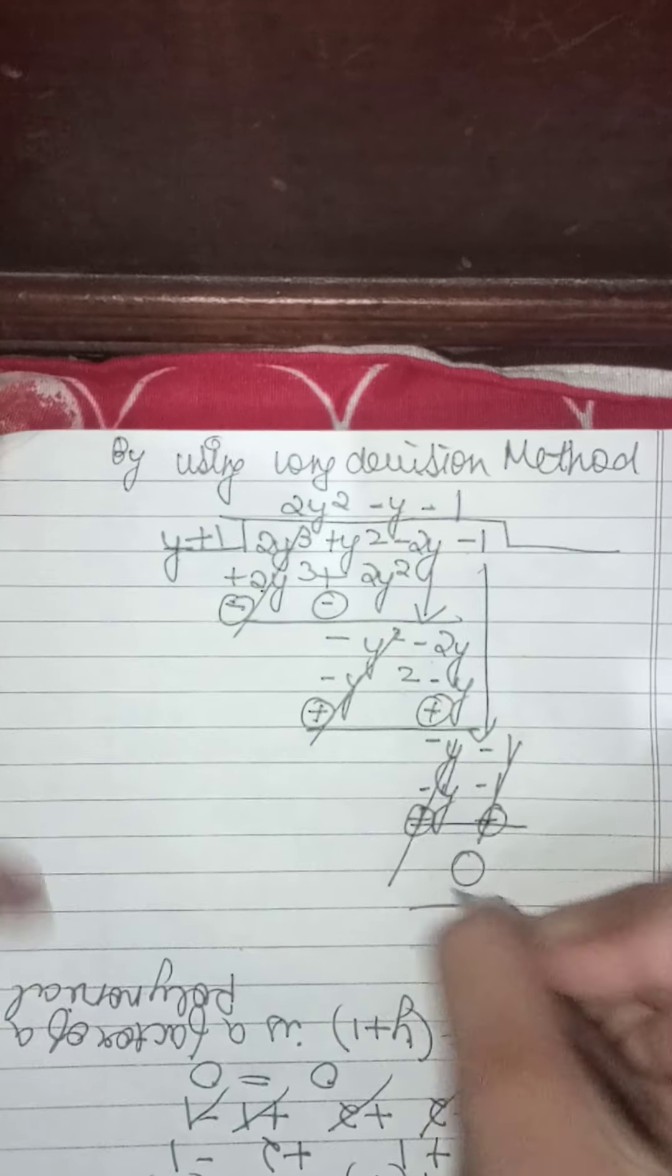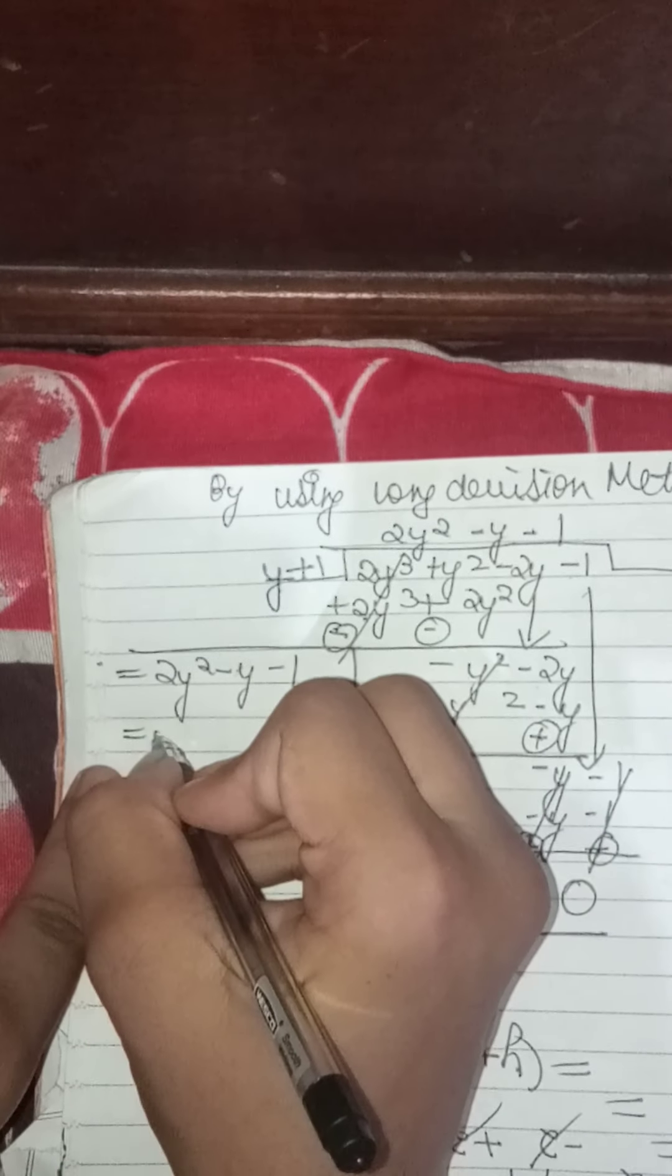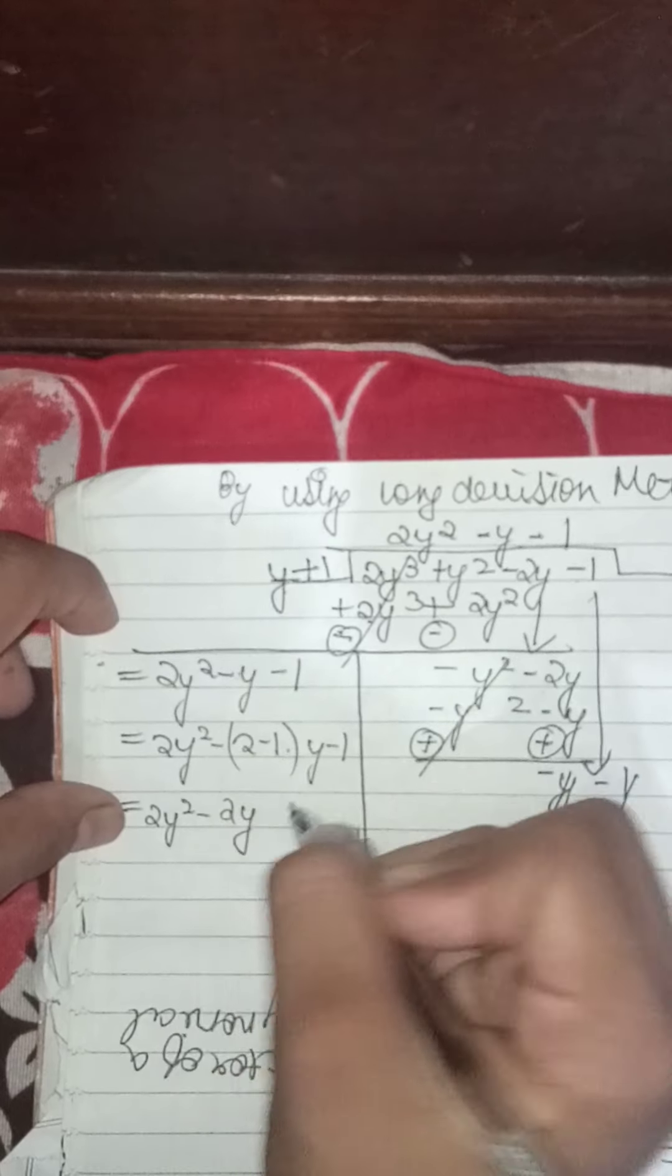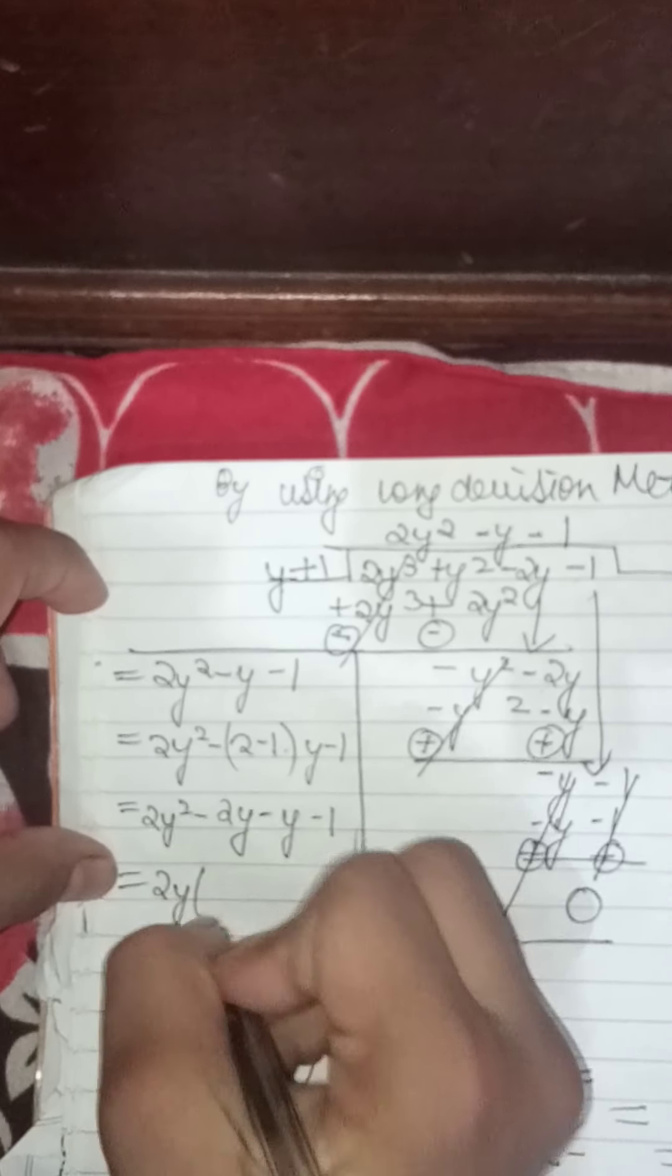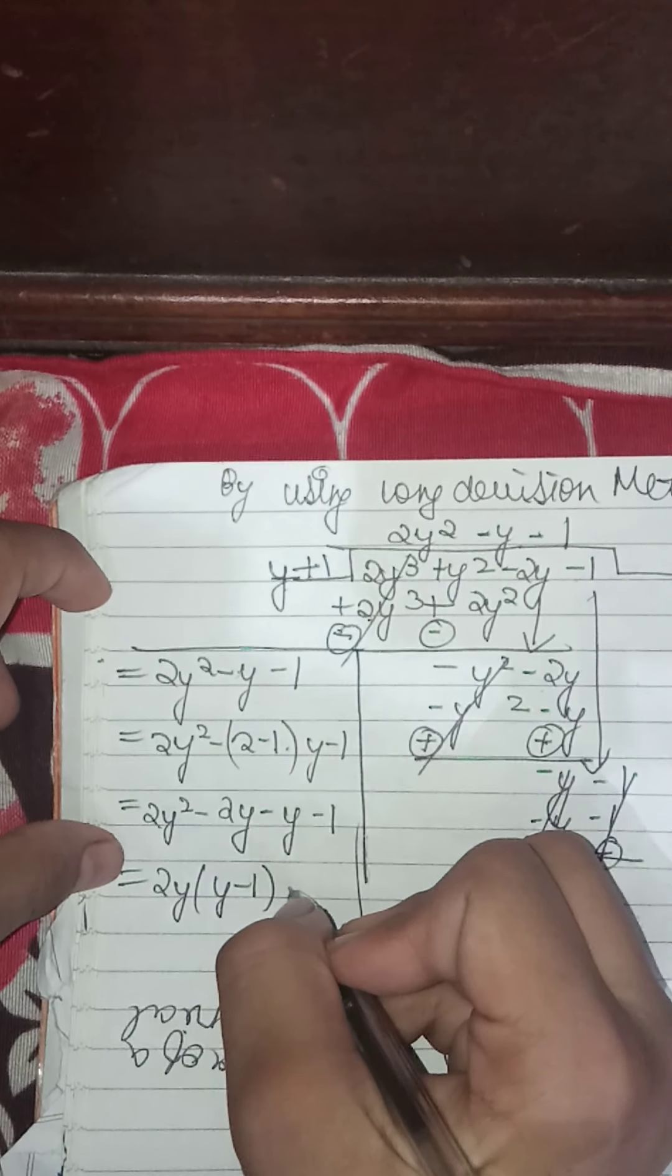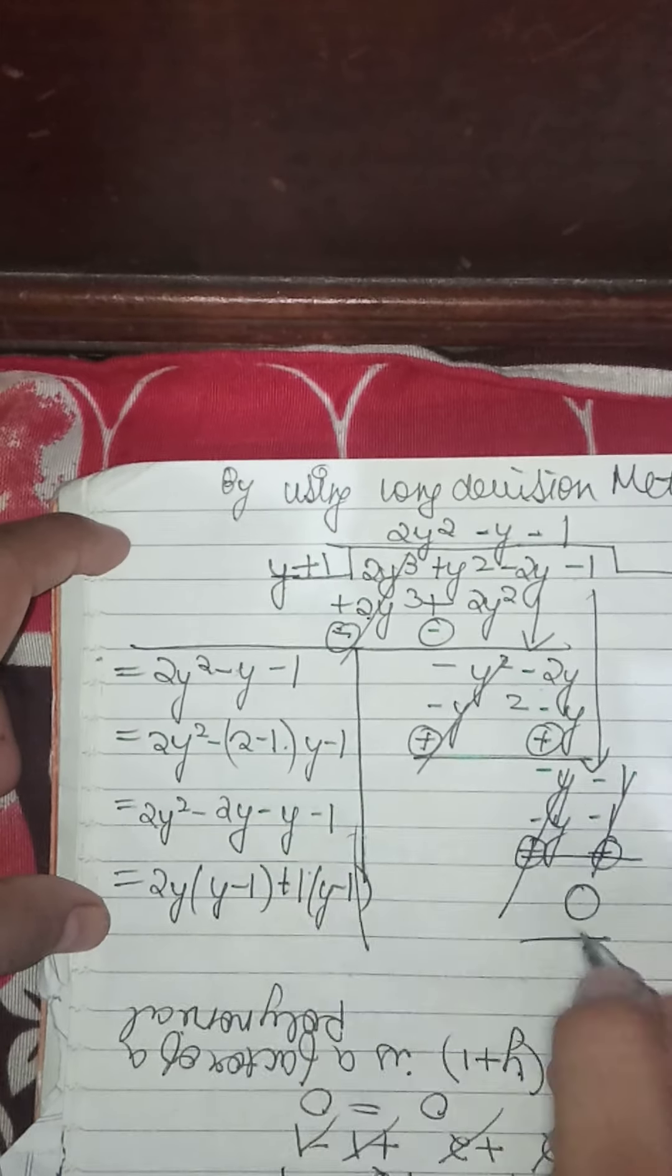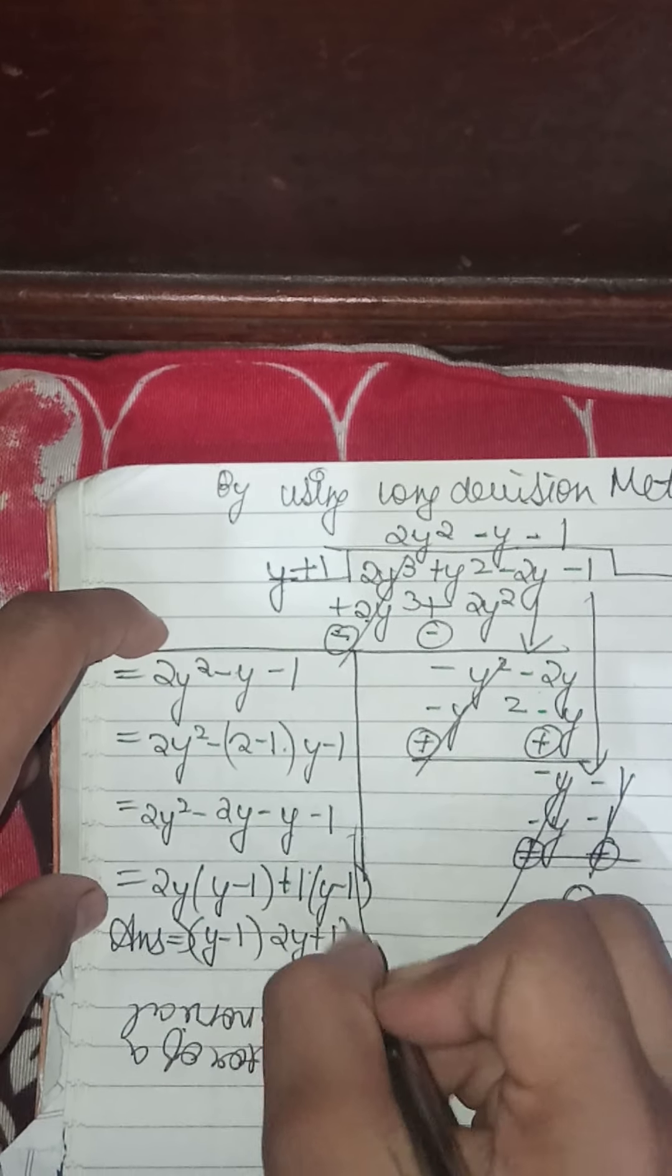Now we will do by using splitting the method. Here is 2y square minus y minus 1. We will take 2y square minus 2y minus 1y minus 1. So we will make 2y square minus 2y minus y minus 1. Here what is common: 2y times y minus 1, then here is plus 1 times y minus 1. So the answer is y minus 1, 2y plus 1, and y plus 1.